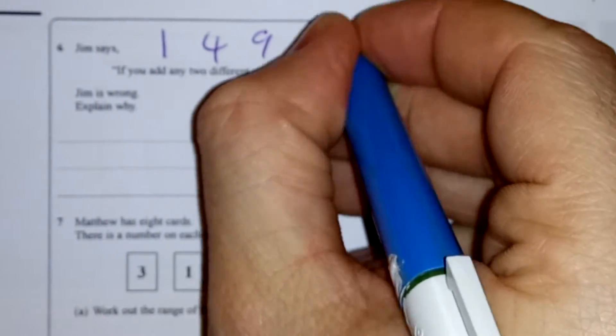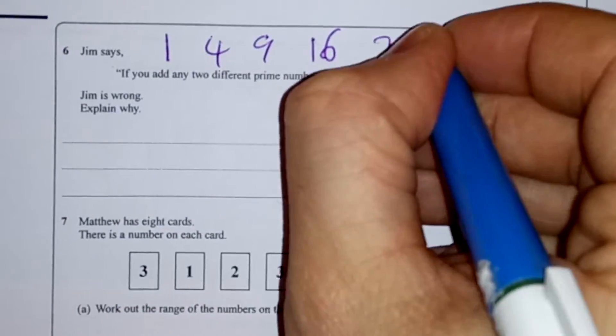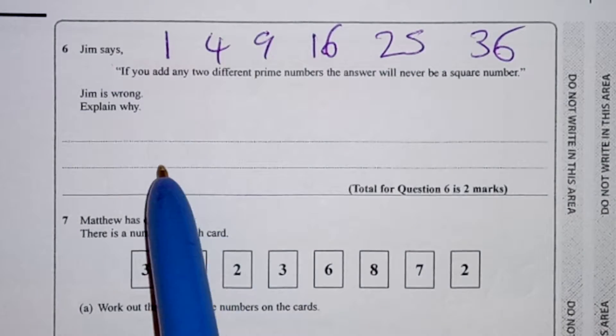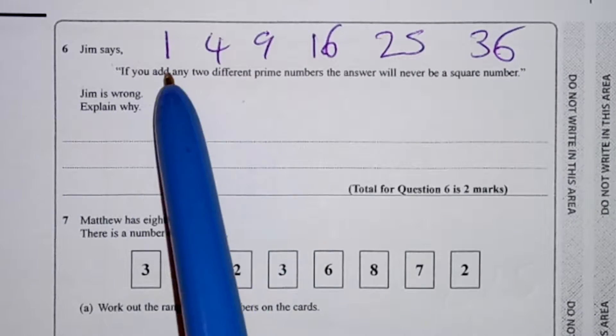times 2 is 4, 3 times 3 is 9, 4 times 4 is 16, then 5 times 5 is 25, and 6 times 6 is 36. Okay, now we want to try and find an example where two prime numbers